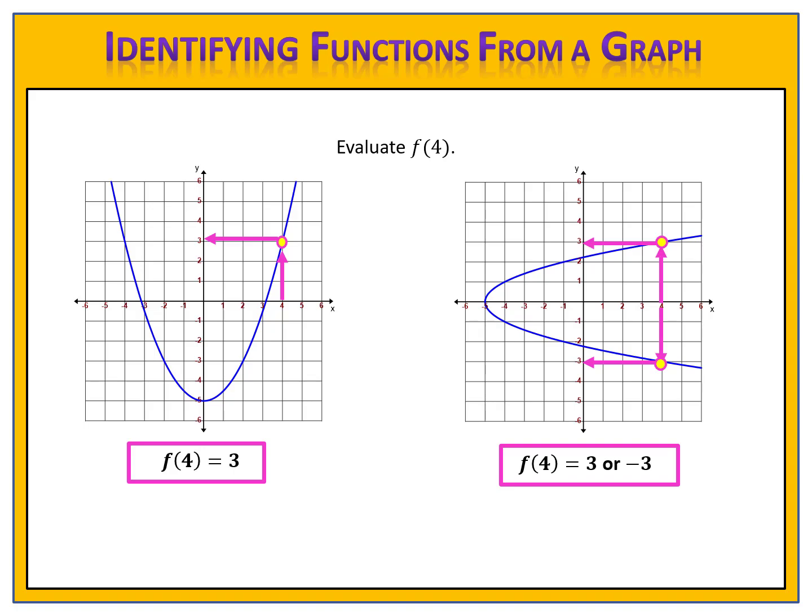The trouble with this is that we know that in a function, each input can produce only one output. This graph, therefore, is not a function, because the input 4 produces two different outputs.